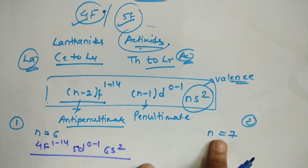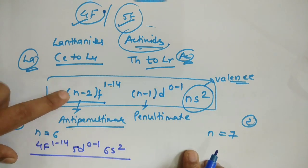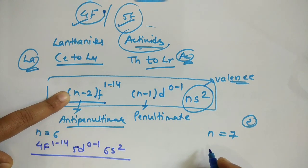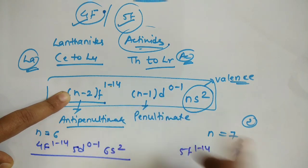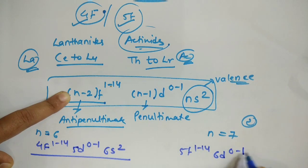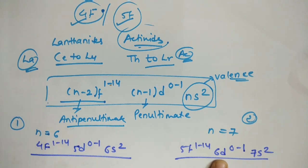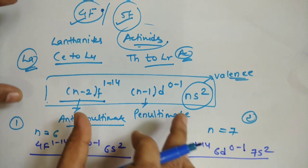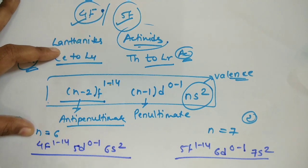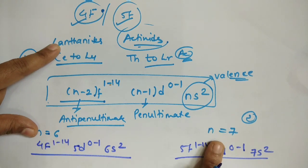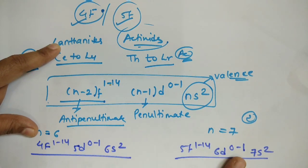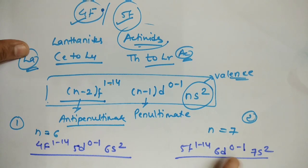For the actinide series with n equals 7: 7 minus 2 gives 5f^1-14, 7 minus 1 gives 6d^0-1, and the valence shell is 7s^2. So the general electronic configuration for actinides is 5f^1-14, 6d^0-1, 7s^2. This is how we consider f-block elements under inner transition elements.